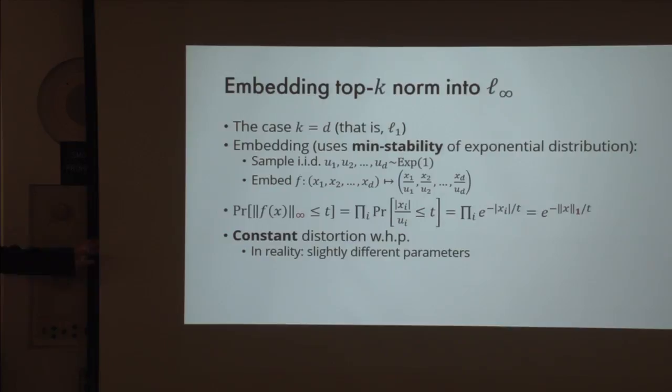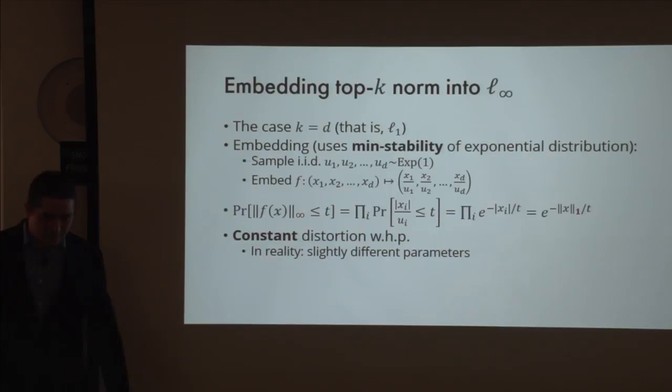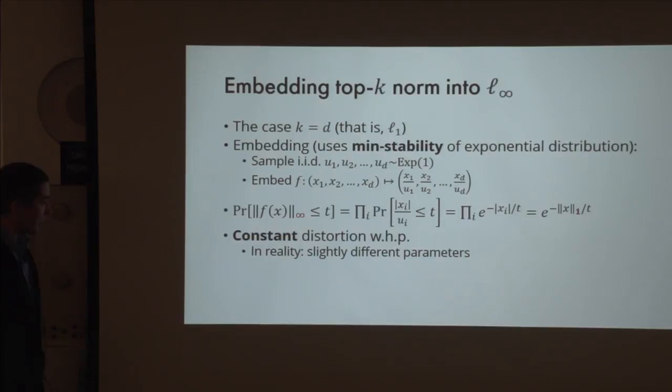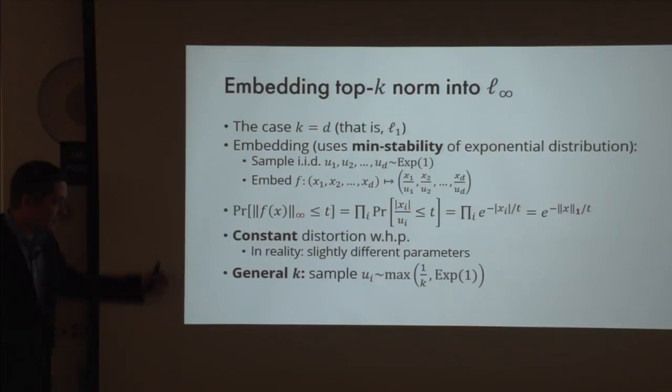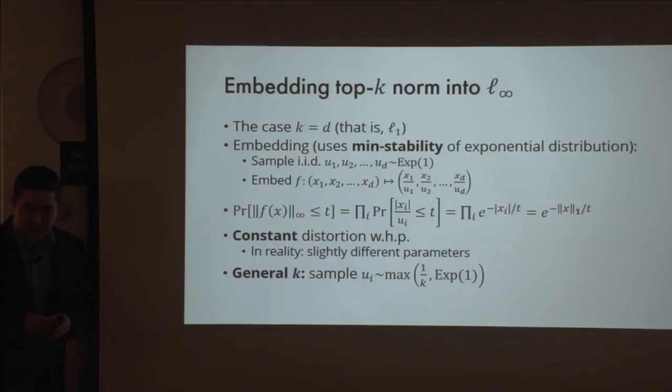For general K, instead of L_1 you handle the general top-K norm: instead of using exponential random variables, you truncate them. Before dividing your coordinates by the random variables, you take the maximum with 1/K. The analysis is not very different—it's pretty much the same simple formula. This approach of using truncated exponential random variables allows you to take the top-K norm, embed it into L-infinity, and use known data structures for L-infinity.